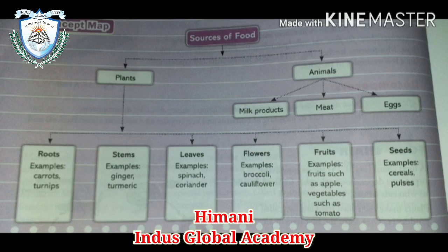Now, the concept map. As I told you, sources of food include two sources: plants and animals. From plants, roots are eaten — for example, carrot and turnip; stem — ginger and turmeric; leaves — spinach and coriander; flower — broccoli and cauliflower; fruits — apple; vegetables; and seeds — cereals and pulses. From animals, there are milk products, meat, and eggs. So, your first chapter is completed.